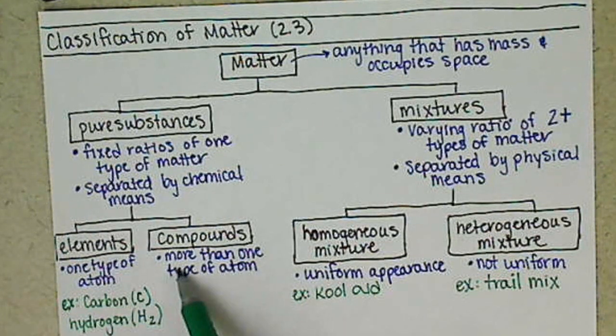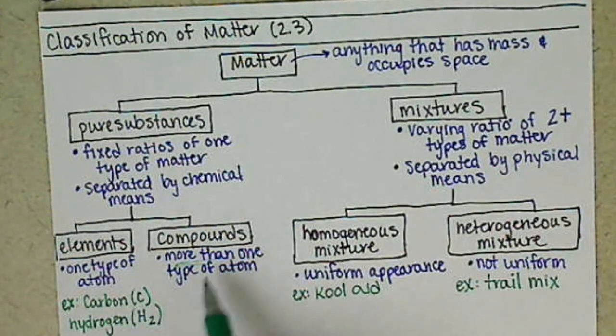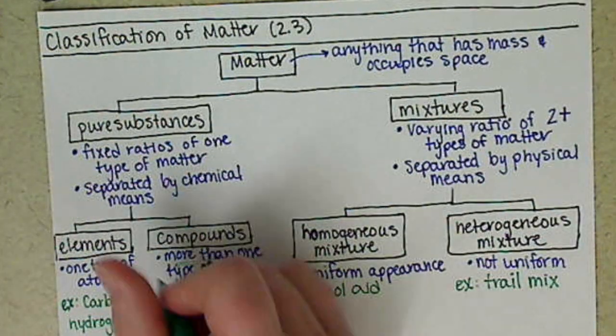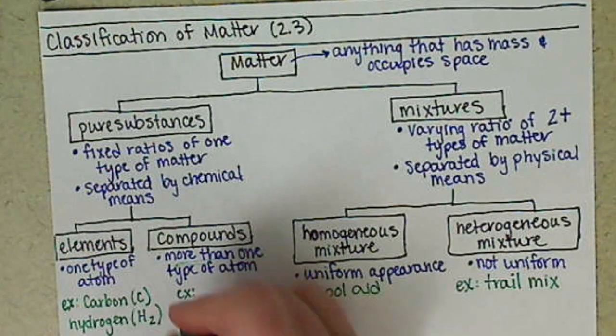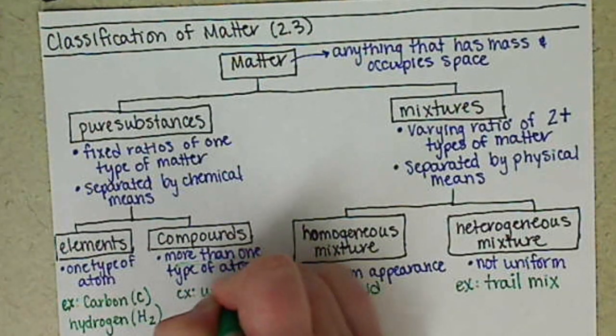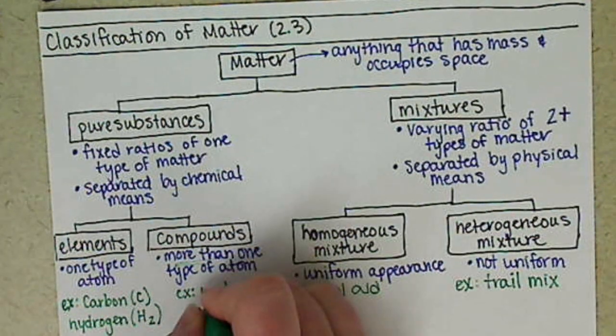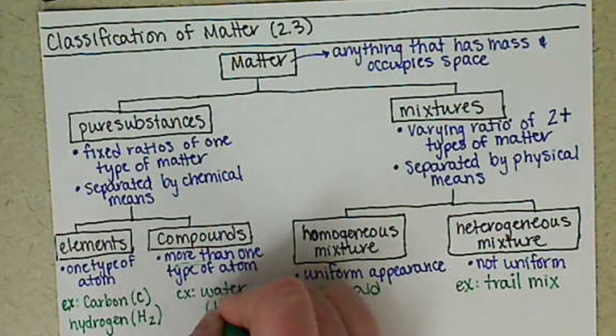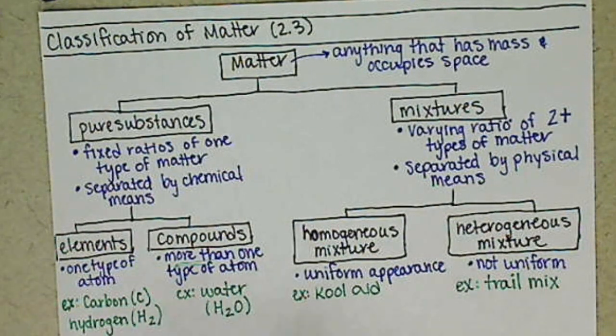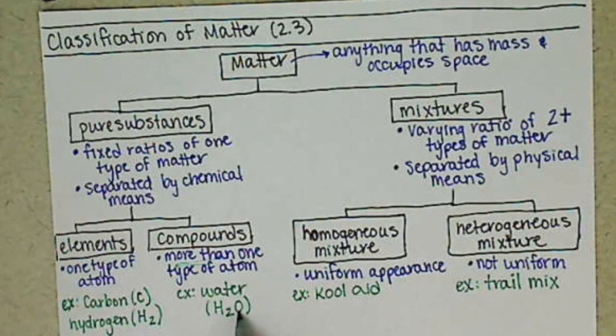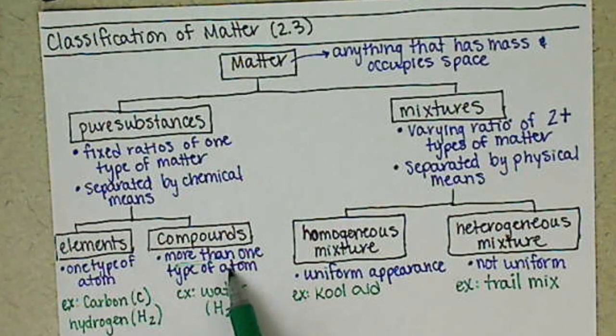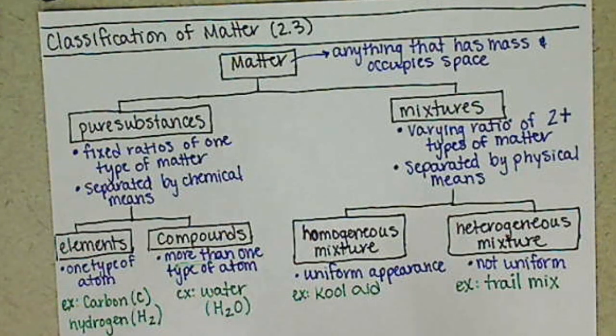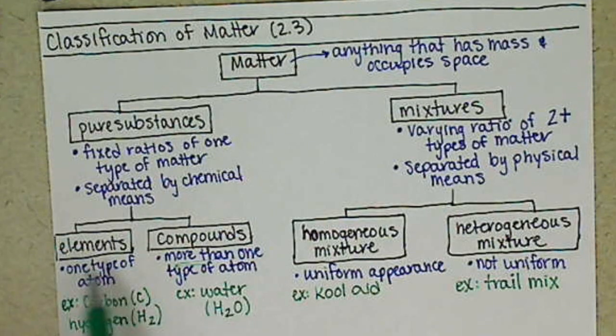For a compound, this is where we're going to start combining more than one type of atom. So an example of this, if we had, say, water. Most of you probably know the formula for water is H2O. So we have two hydrogens and one oxygen in each molecule of water. So we have more than one type of atom. We have oxygen atoms in there and we have hydrogen atoms in there. So that's how we distinguish between elements versus compounds.